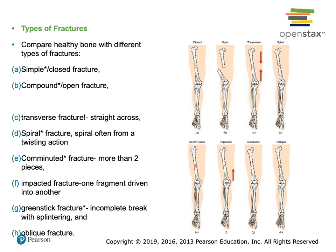Simple versus compound fracture just means the bone is either sticking out of the skin or it's not. Simple is also called closed; compound is also called open. A transverse fracture goes straight across. A spiral fracture has a spiral to it like a spiral staircase. Comminuted means it's more than one piece. An impacted fracture is very common in a vertebra — the top part of your vertebra collapses onto the bottom part, such as when you fall and jar your back.